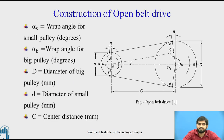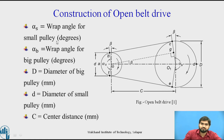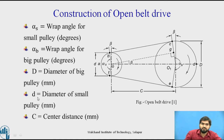This is a simple diagram of the open belt drive in which two pulleys are there — one is a larger pulley and another is a smaller pulley. The belt is mounted on these two pulleys. The smaller pulley has diameter small d and capital D for the larger pulley. Alpha S is the wrap angle for the smaller pulley — the wrap angle is nothing but the portion of the belt going to contact with the pulley. Alpha B is the wrap angle for the bigger pulley. C stands for the central distance.